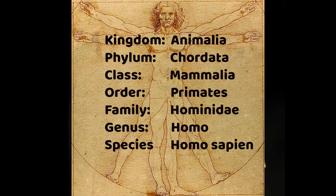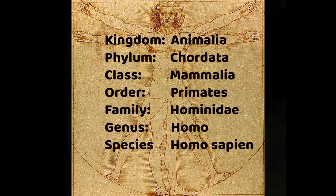Phylum: we are chordata — we are chordates. Primarily, we have a backbone. We're in the class Mammalia; we are mammals. We are in the order Primates, which includes all the monkeys, the great apes, and humans. We're in the family Hominidae, which only includes the great apes and humans. And finally, our genus and species is Homo sapien — intelligent human is really what that means.